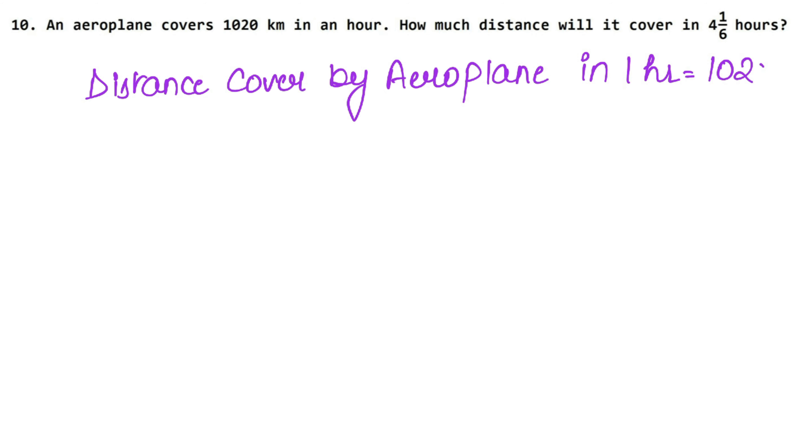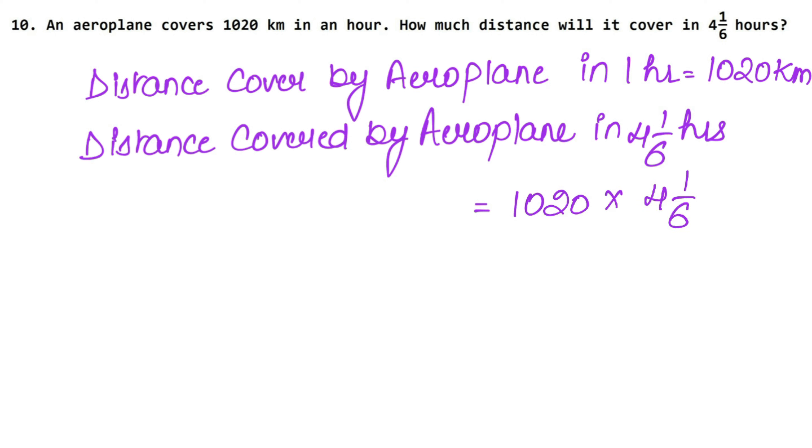In 1 hour, aeroplane covers 1020 km. So in 4 hole 1 upon 6 hours, how much distance will it cover? Distance covered by aeroplane in 4 hole 1 upon 6 hours. See, one hour's value is given, more hours we need to find, so what did we do? Multiply. So 1020 multiply by 4 hole 1 upon 6 and answer will be in kilometers because we need to find distance.